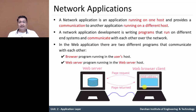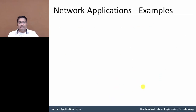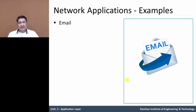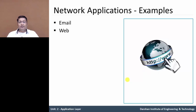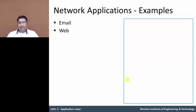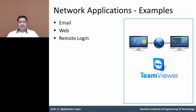Let's see different network applications in the real world. The first example is email — Gmail, Yahoo Mail, and Outlook are examples of network applications. Web: www.gtu.ac.in or www.darsan.ac.in are examples of web network applications. Remote login: a computer can connect to another computer which is remotely located and connected through the internet. An example is TeamViewer.